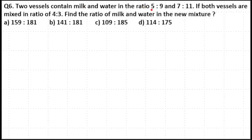Two vessels contain milk and water in the ratio 5:9 and 7:11. If both vessels are mixed in a ratio 4:3, find the ratio of milk and water in the new mixture.